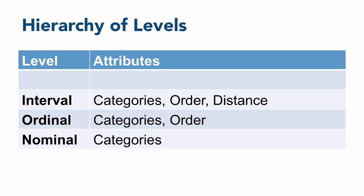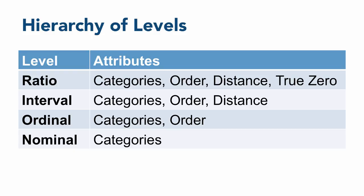And finally, the highest level of measurement, the one that contains the most information, is the ratio level of measurement. It keeps the categories, order, and uniform distances of the other three levels, but adds a true zero point, which makes it possible to form ratios between scores.